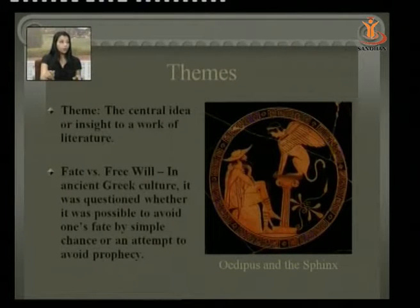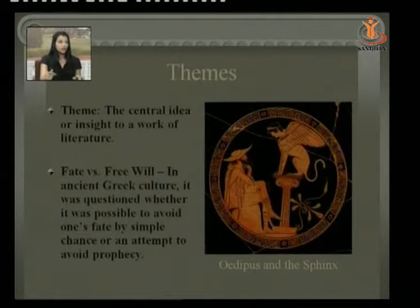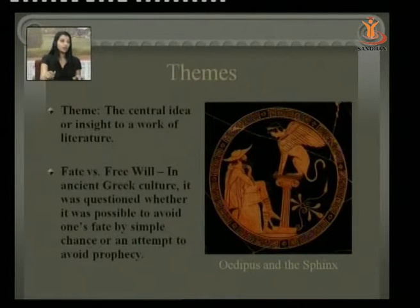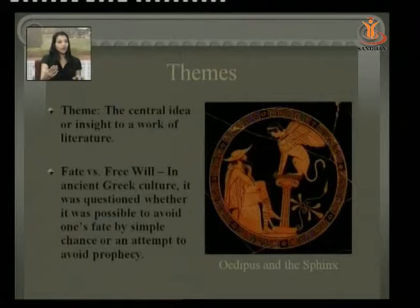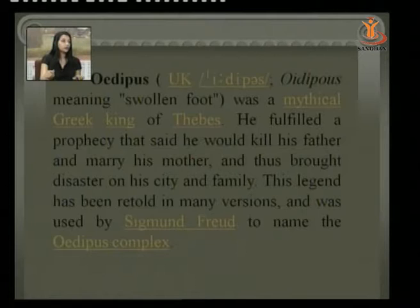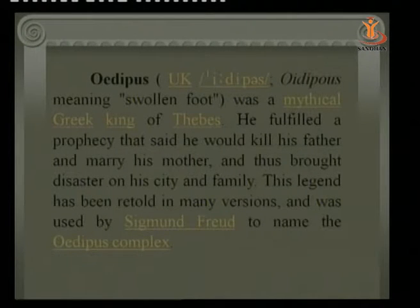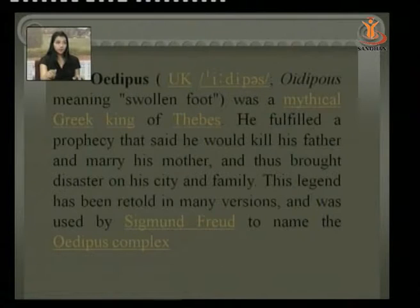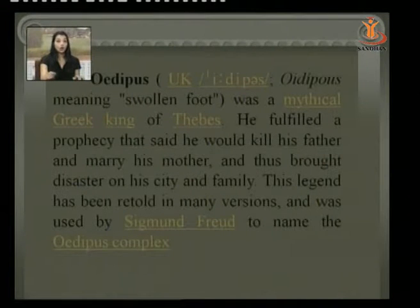The theme, the central idea of a work of art, in Oedipus Rex is fate versus free will. In Greek culture, it was always a question whether it was possible to avoid one's fate by a chance or an attempt to avoid prophecy — because we always believe in destiny. Can we change destiny? That question prevails even now. 'Oedipus' means swollen foot, and he was a mythical Greek king of Thebes who fulfilled a prophecy that said he would kill his father and marry his mother, thus bringing disaster on his country and family.